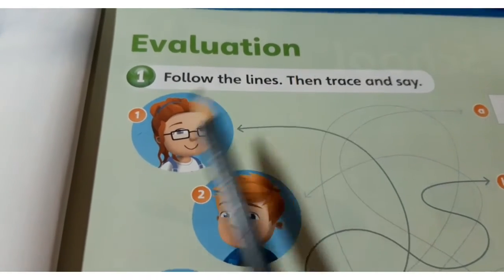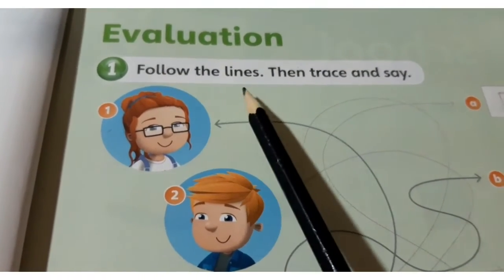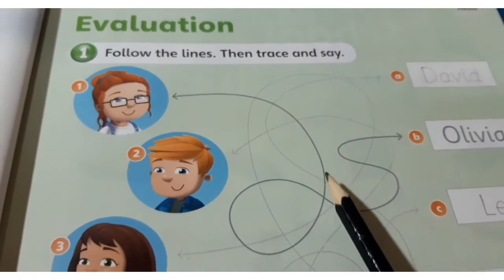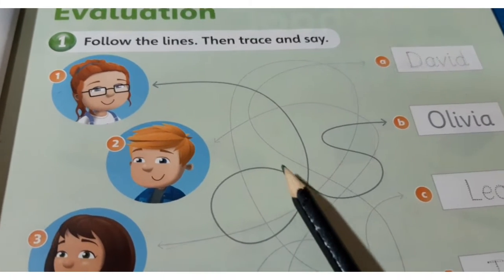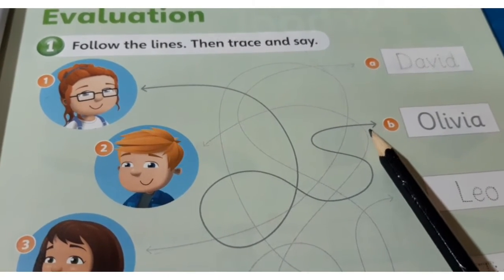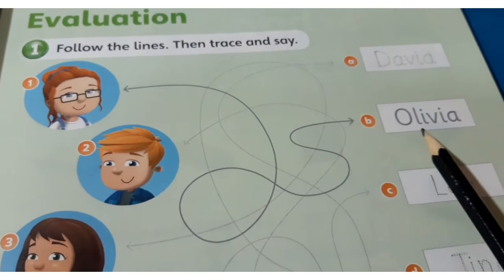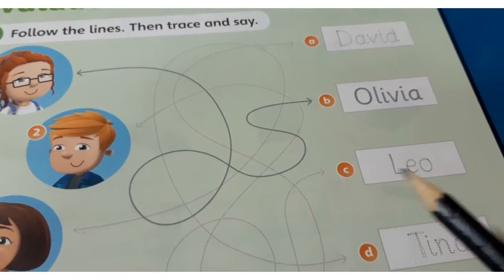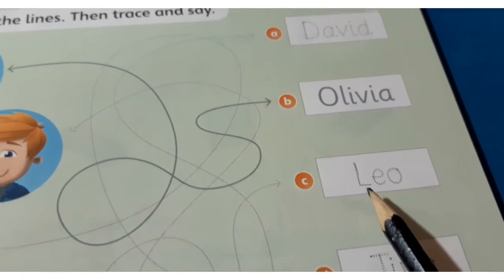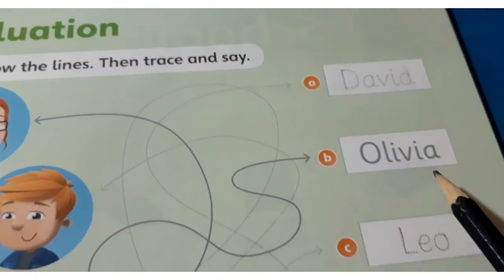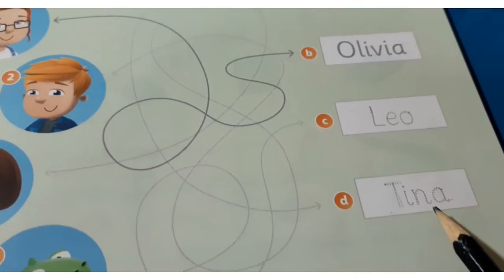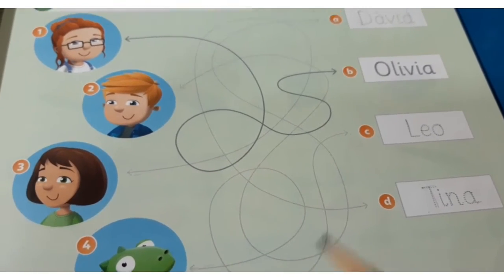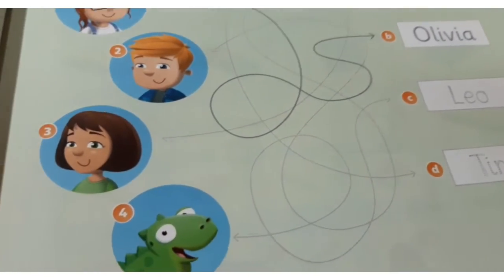Evaluation — avaliação. Follow the lines, then trace and say. So here you'll follow the lines with your pencil, like Olivia's name — you trace and say 'Olivia.' Then complete the dotted lines for David, Leo, and Tina. Follow the lines with your pencil and complete them, alright?